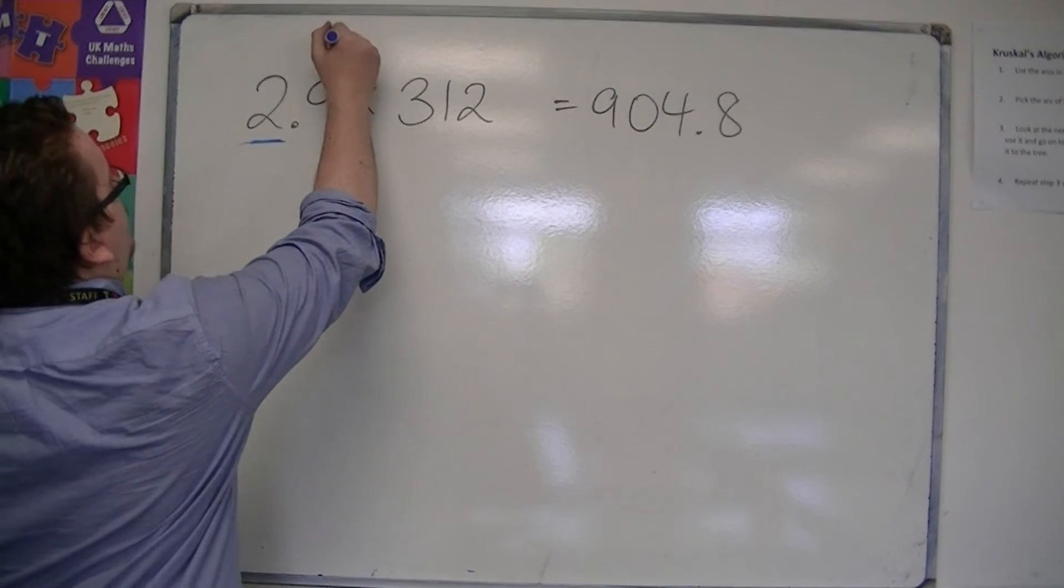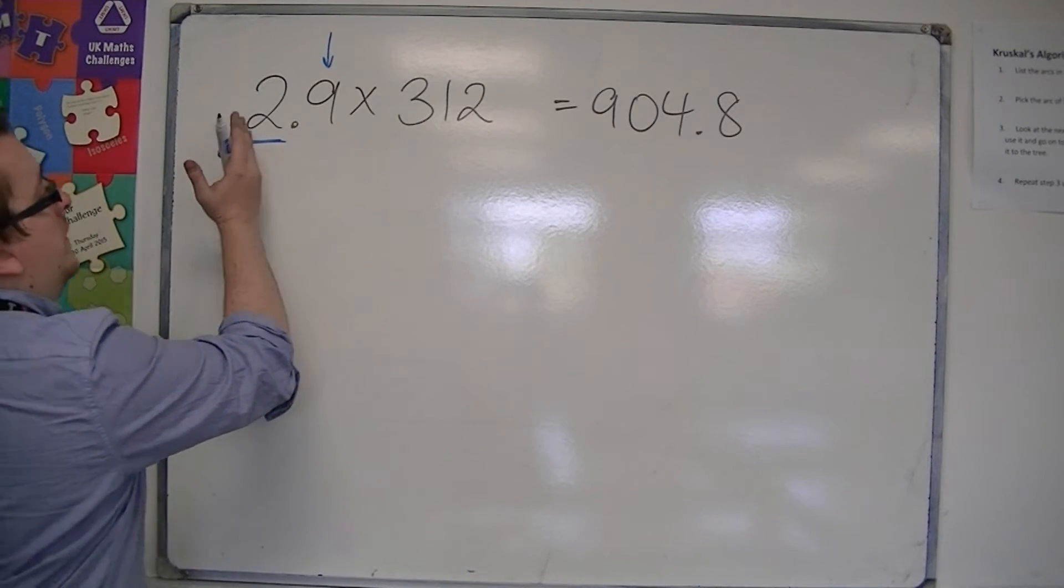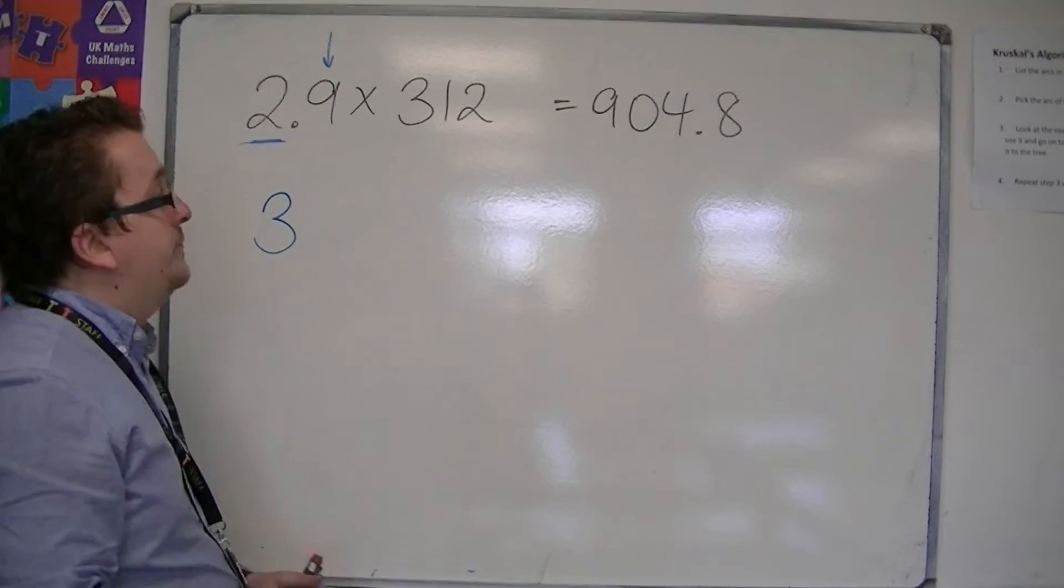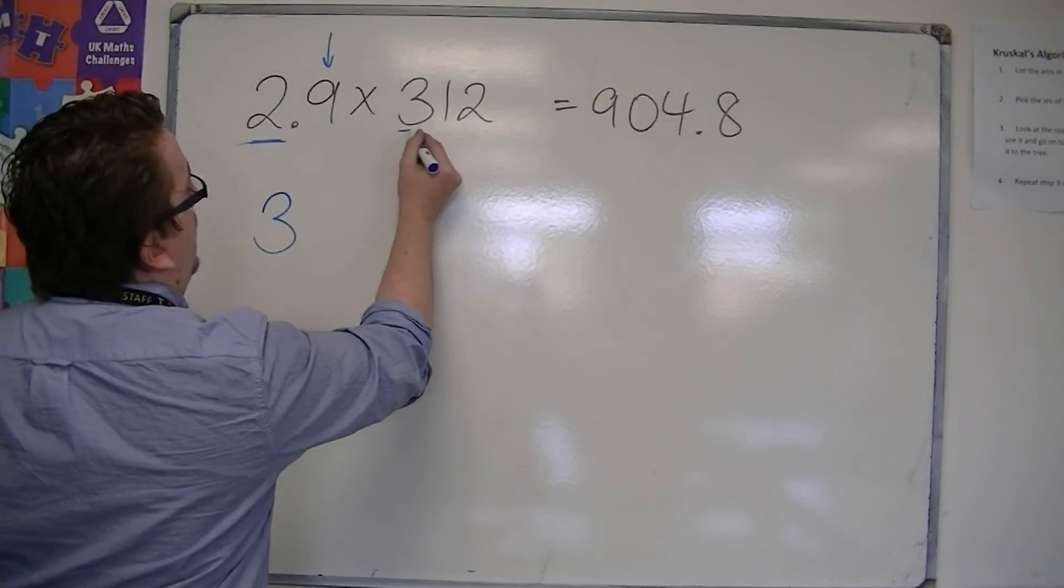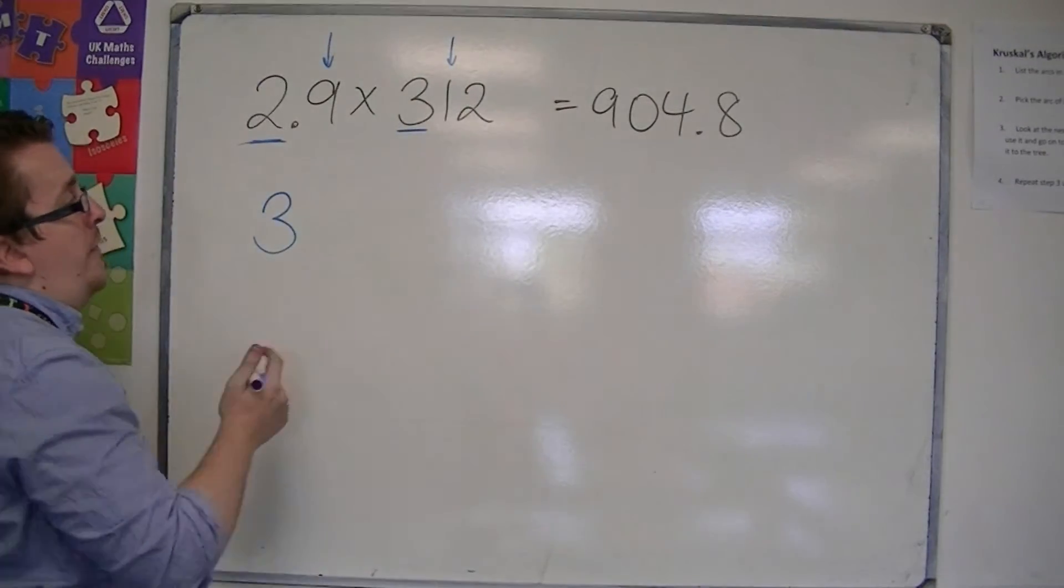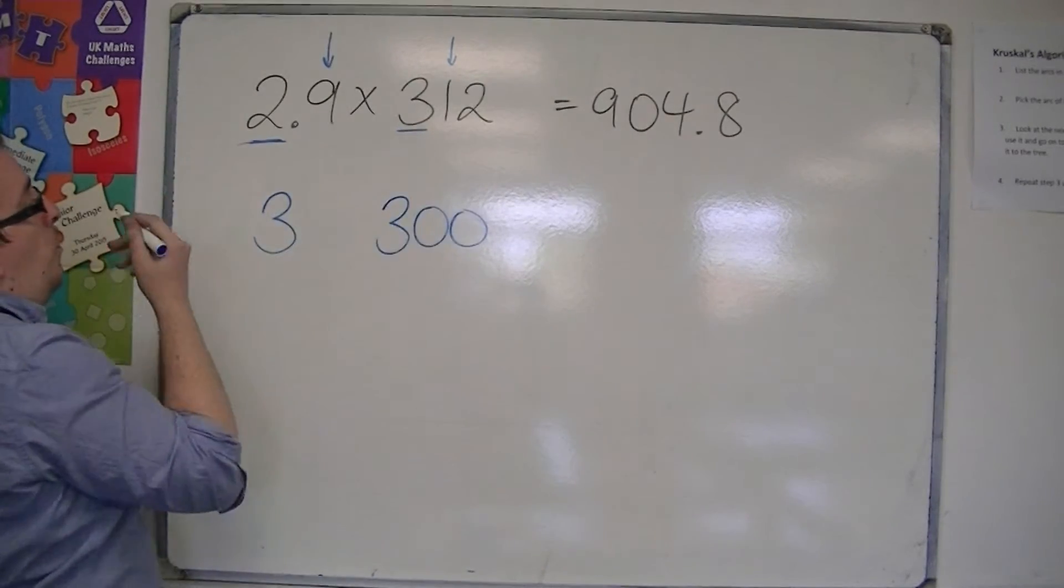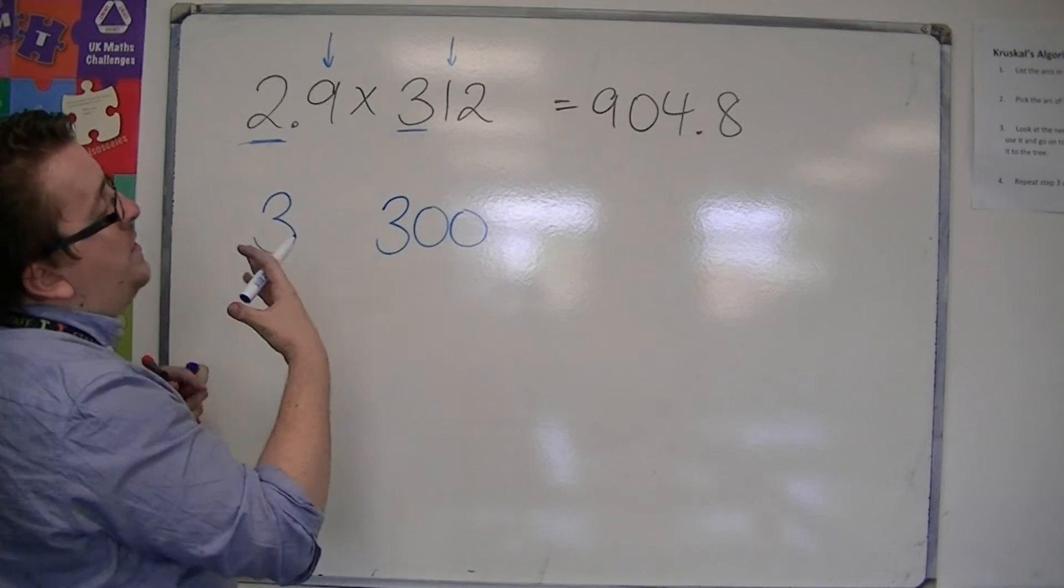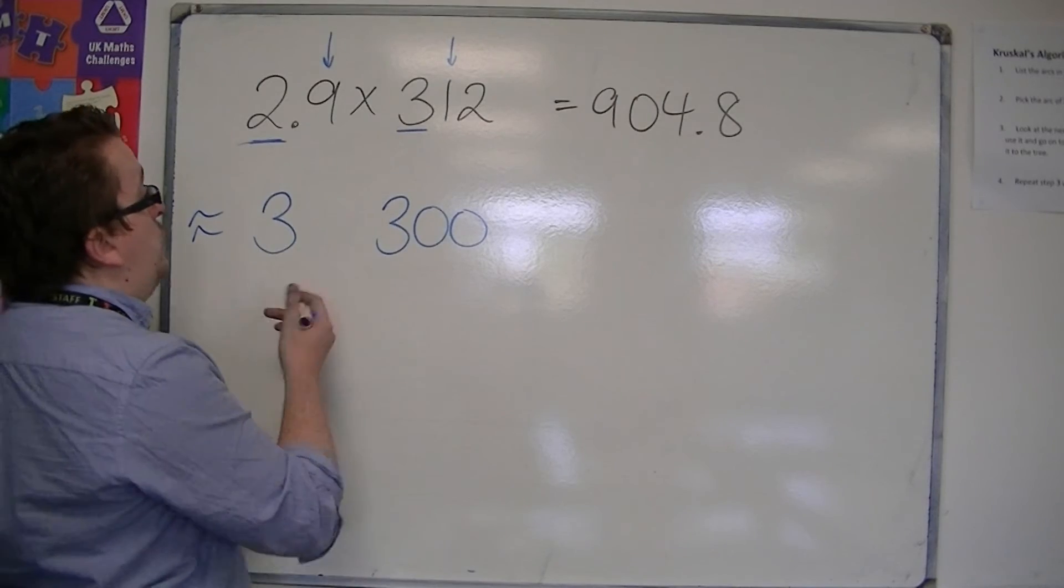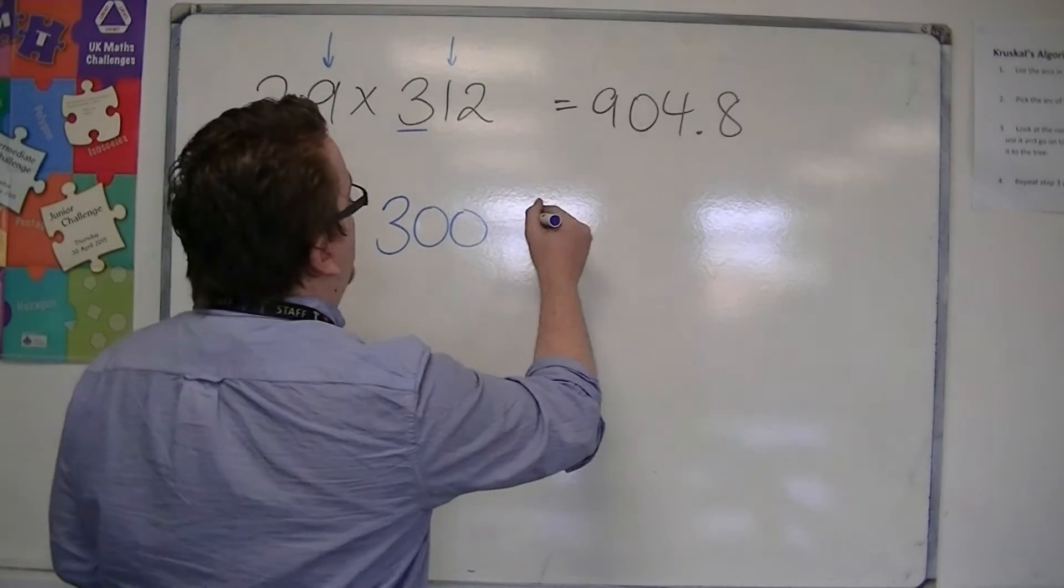So rounding 2.9 to one significant figure, that's my first significant figure column. The next one tells me to round it up, so I would round 2.9 to 3. And 312, that's the first significant figure column. The one to the right tells me to round down, so I'm going to round that to 300. So what I can say is that 2.9 times 312 is approximately equal to 3 times 300. Now 3 lots of 300 I can do in my head. That's 900.